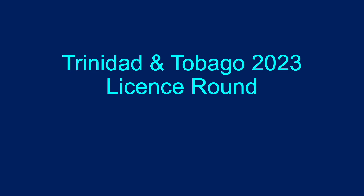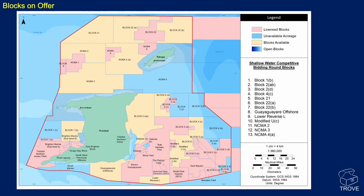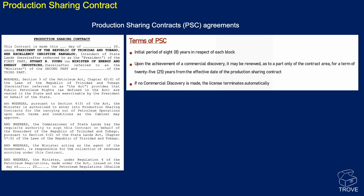Let's have a look at the Trinidad and Tobago 2023 licensing round. Here are the blocks on offer, highlighted in orange. The pink blocks are the licensed areas in the shallow waters. There are 13 blocks shown, all named and numbered. The shallow competitive bid round opened on the 3rd of October 2023, and the deadline for submission is noon on May the 27th, 2024 — about six weeks away. Successful bids will be announced four months after the close of bidding.